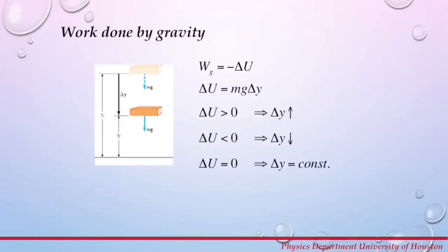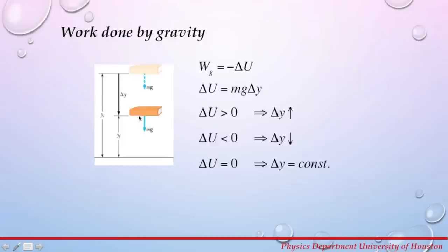When an object has a vertical displacement, gravity does work on it. The work done by gravity is related to the change in potential energy by the equation: W_gravity = −ΔU. If we drop a book from height y to the surface of a table, the initial potential energy is mgy_i, and at a later point in mid-air it is mgy_f. The change in potential energy is given by ΔU = mg·Δy, where Δy is the vertical displacement of the object.